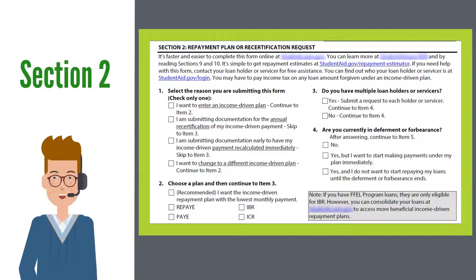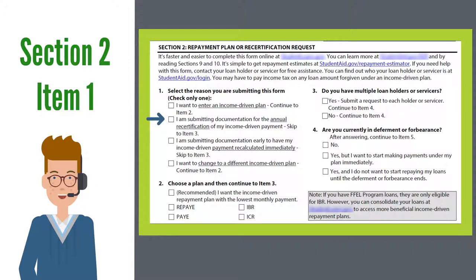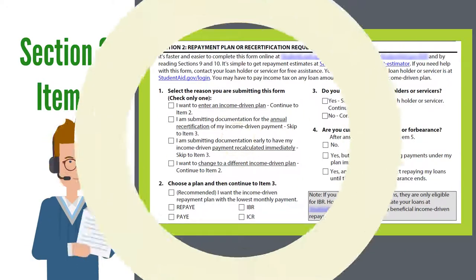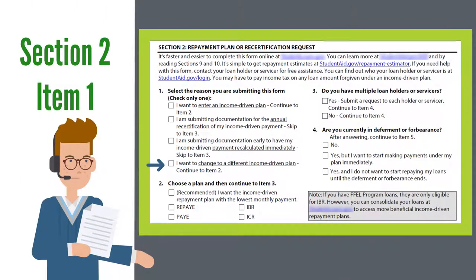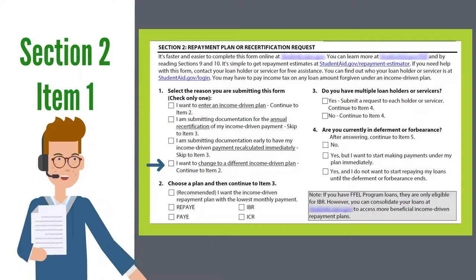Section 2, item 1 asks why you are filling out the application. Select the first box if you are not currently in an income-driven repayment plan. If you are submitting income documentation to annually recertify the application or recalculate your payment amount based on a change in income, select the corresponding box. Lastly, if you want to change to a different income-driven repayment plan during your 12-month application, you would select the last box.